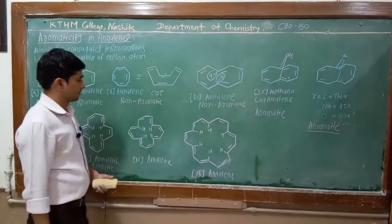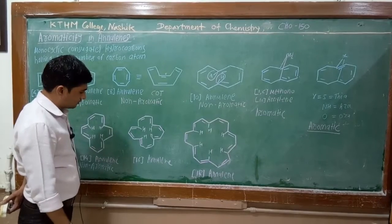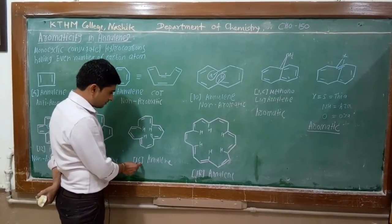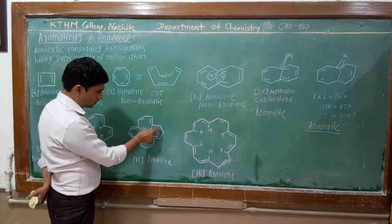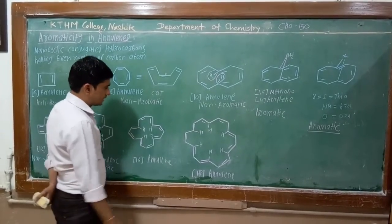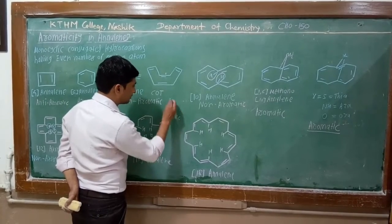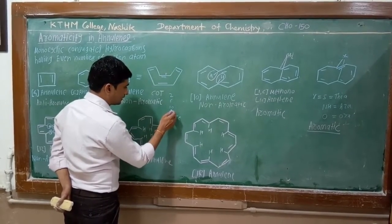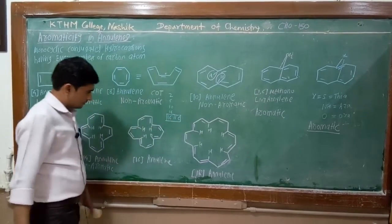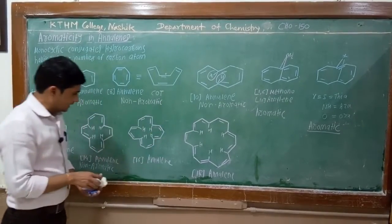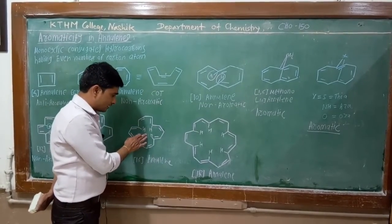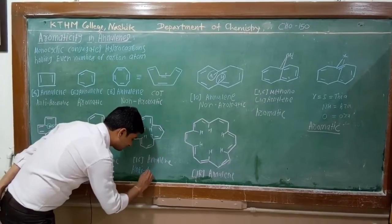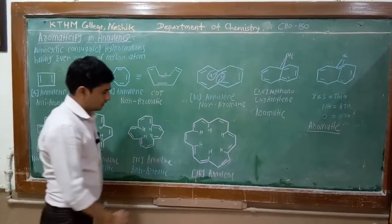According to the Hückel rule, there are 16 carbon atoms in 16-annulin, meaning 8 pi bonds — this is a 16 pi electron system. The aromatic series goes 2, 6, 10, 14... but 16 pi electrons fall in the anti-aromatic system. Therefore, though this system is cyclic, planar, and conjugated, it is anti-aromatic.